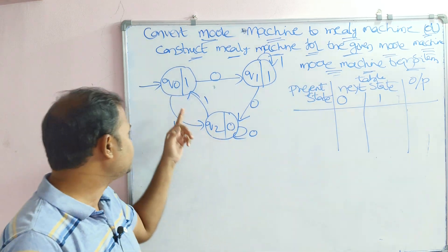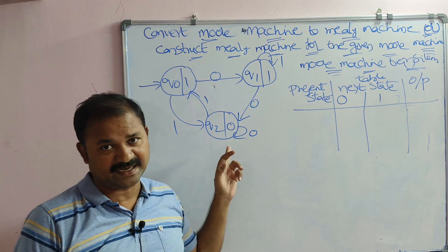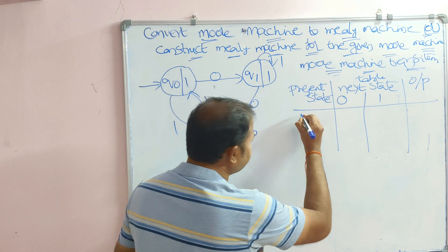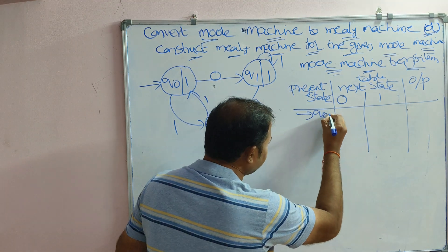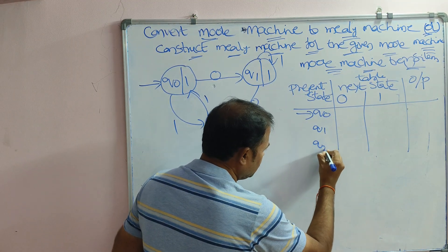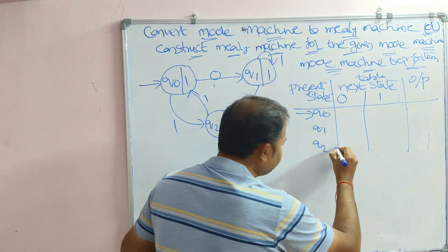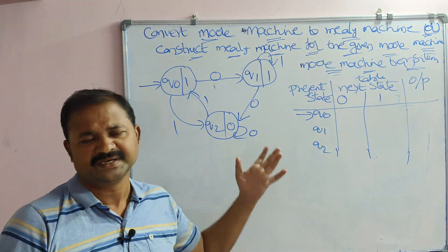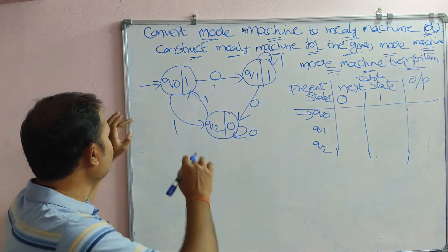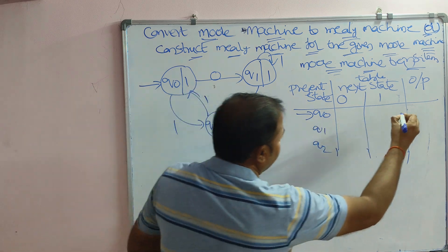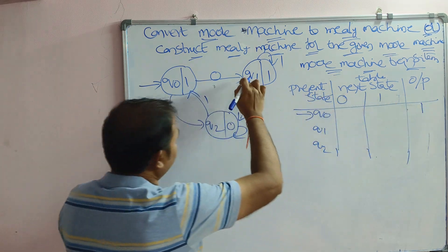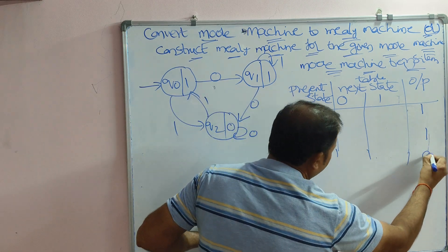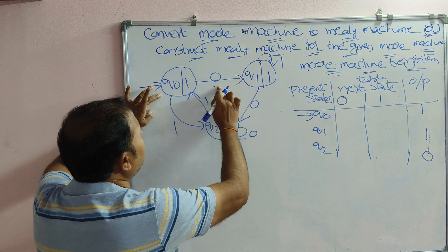The states are Q0 (the initial state), Q1, and Q2. Moore machines and Mealy machines do not have any final state, so there is no need to enclose states within double circles. The output of Q0 is 1, the output of Q1 is 1, and the output of Q2 is 0.